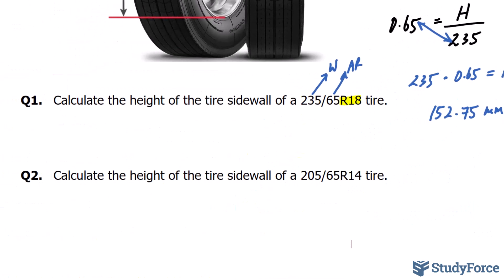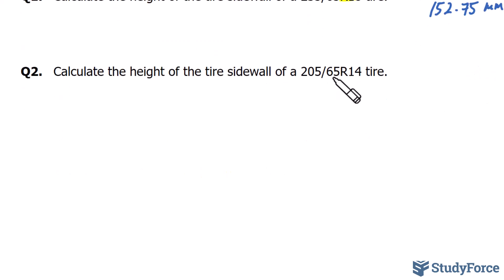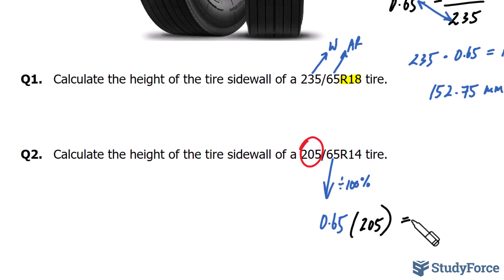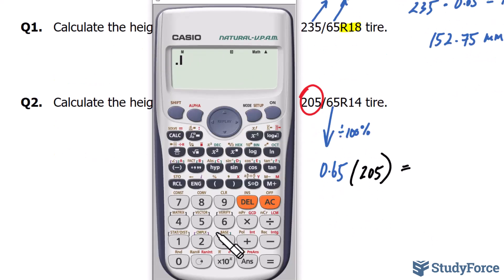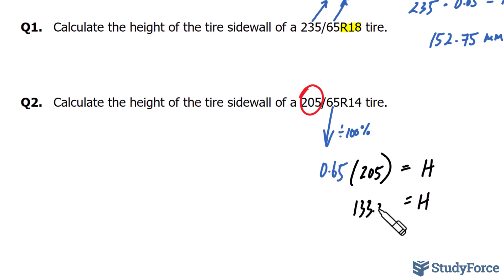Let's do one more calculation. Calculate the height of the tire sidewall of a 205-65R14 — so we're dealing with a smaller wheel here. The aspect ratio is again 65, so dividing by 100 gives us 0.65. We take that value and simply multiply it by 205. Multiplying 0.65 by 205 gives us the tire sidewall height of 133.25 millimeters.